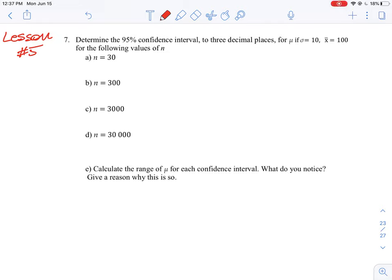In this question we're going to calculate confidence intervals for a certain set of data. We are determining the 95% confidence interval to three decimal places for the mean if the standard deviation is 10 and the sample mean is 100 for the following values of n. So these are our sampling sizes.